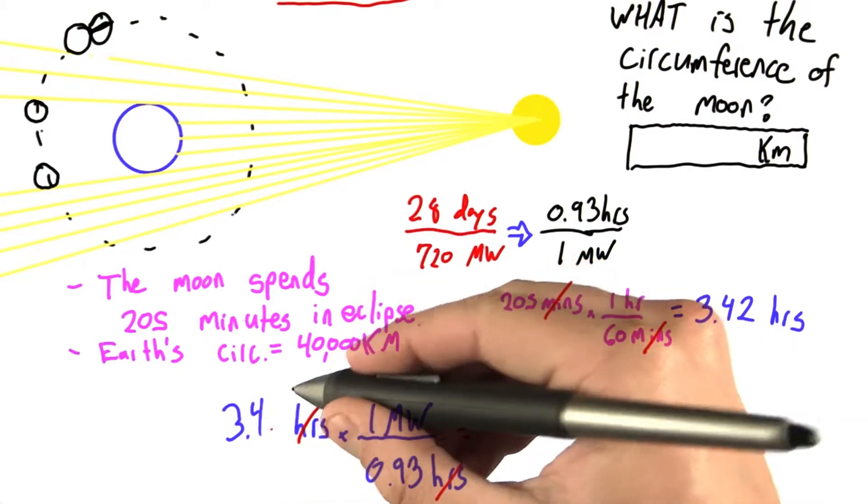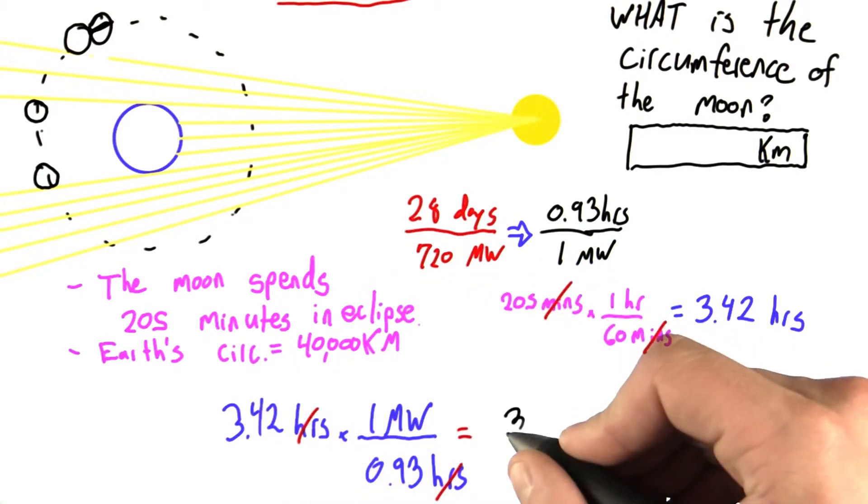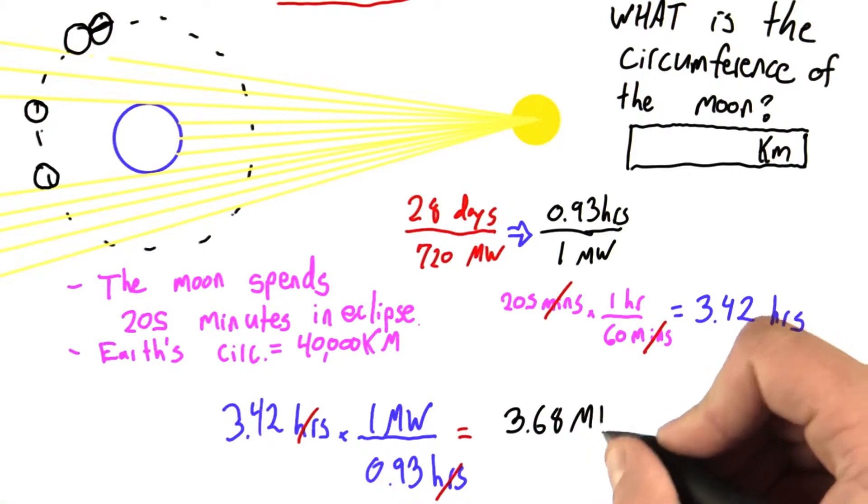Sorry, this should have been a 2. And this equals 3.68 moon widths.